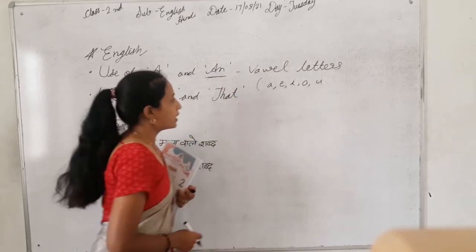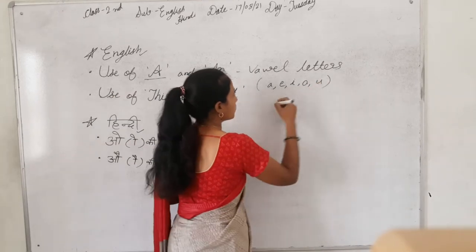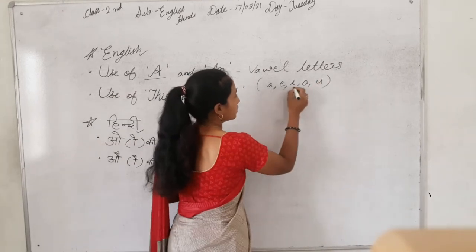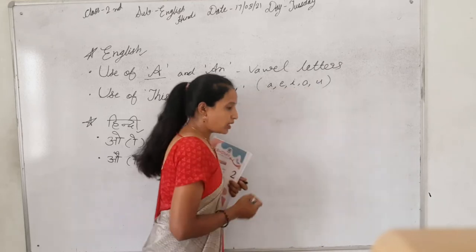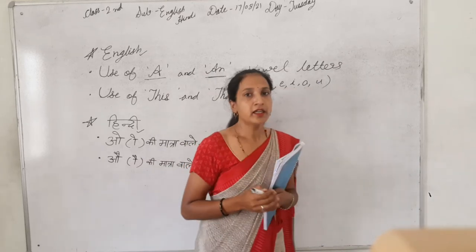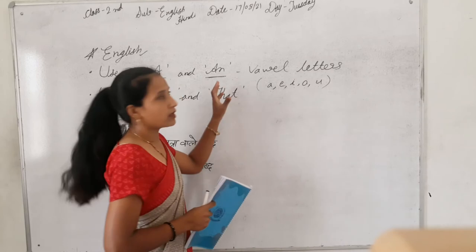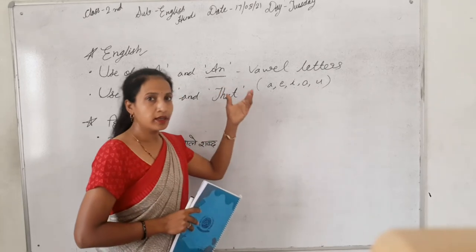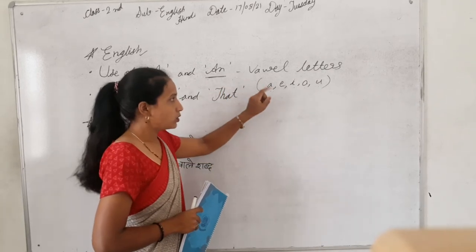This vowel letter — A, E, I, O, U — one, two, three, four, five. There are five vowel letters. So if there is a word in English and its first letter is a vowel, then AN is used.